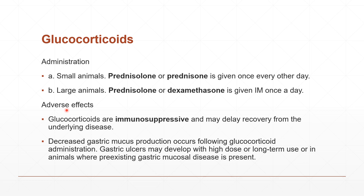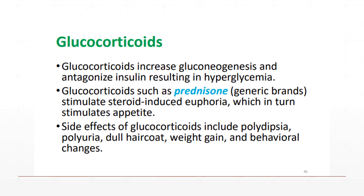Adverse effects of glucocorticoids include immunosuppression, which may delay recovery from underlying disease. They also decrease gastric mucus production, and gastric ulcers may develop with high-dose or long-term use, or in animals with pre-existing gastric mucosal disease. Glucocorticoids increase gluconeogenesis — the synthesis of new glucose from non-carbohydrate sources — and have an antagonistic effect on insulin, which can result in hyperglycemia or diabetes mellitus. Prednisone simulates steroid-induced euphoria, which in turn stimulates appetite.